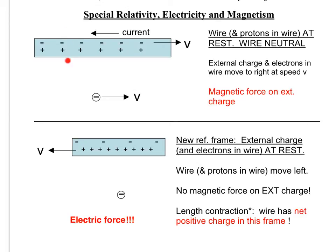However, let's imagine that this wire is actually really very thin, so that the protons and electrons are essentially right on top of each other, and hence equidistant from this external negative charge. Furthermore, we're going to assume that in this frame of reference, the wire segment is electrically neutral. That is, in a given length of wire segment, there are the same number of protons as there are electrons. Consequently, the attraction of the external negative charge to the protons will be balanced by an equal repulsion from the electrons, so there will be no net electrical force on this external negative charge.